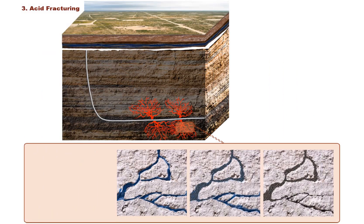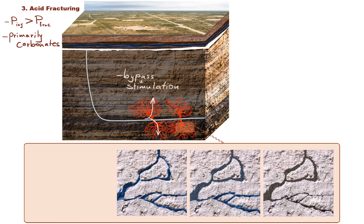Finally, let's discuss acid fracturing. In this treatment, acid is intentionally pumped at pressures above formation fracturing pressure. Such treatments are primarily used in carbonates. In this case we bypass the formation damage and stimulate the undamaged formation at the same time. This technique is an alternative to both matrix acidizing and hydraulic fracturing.